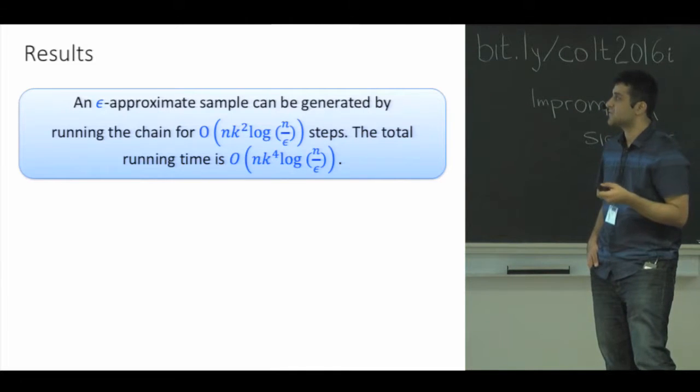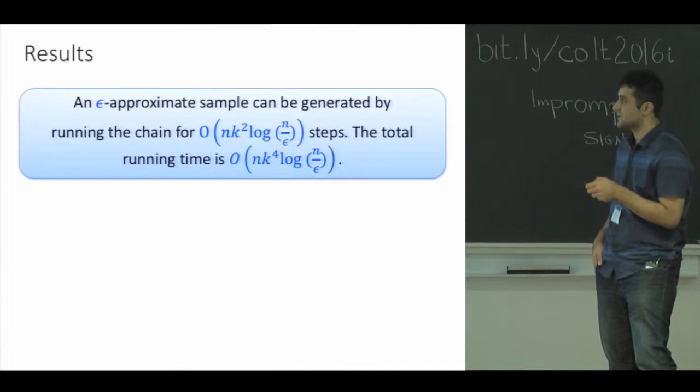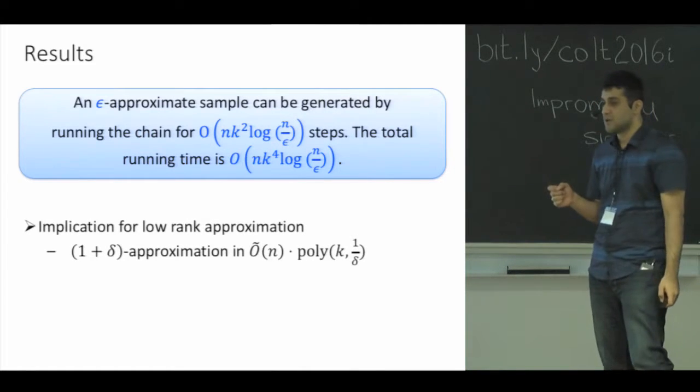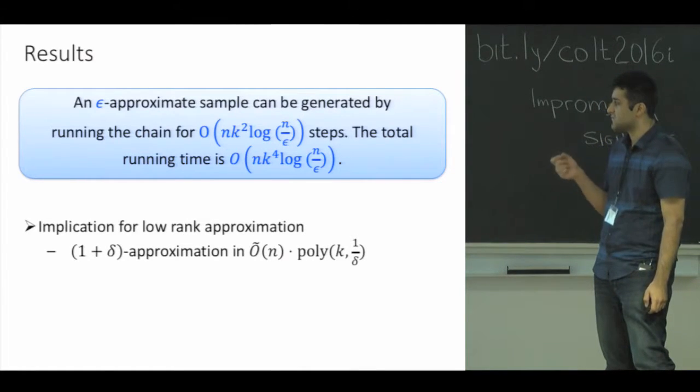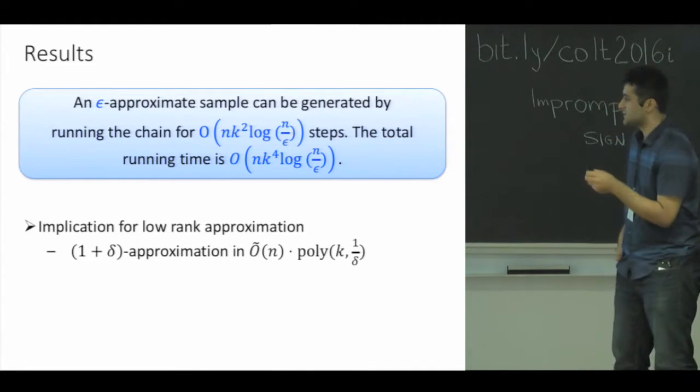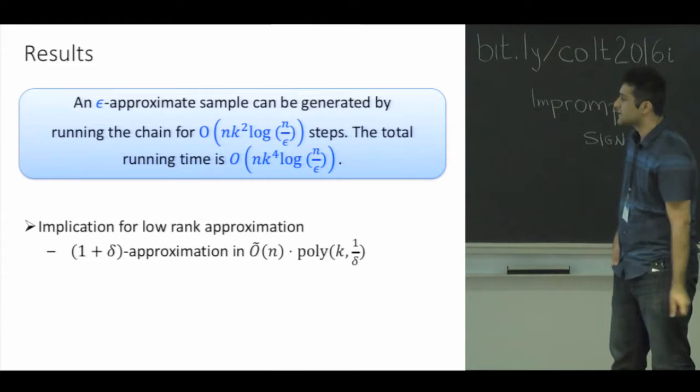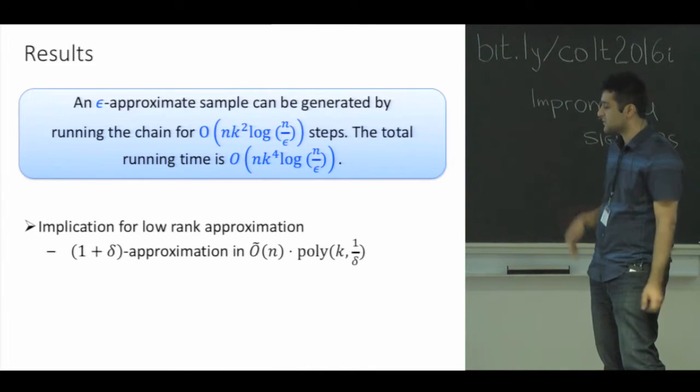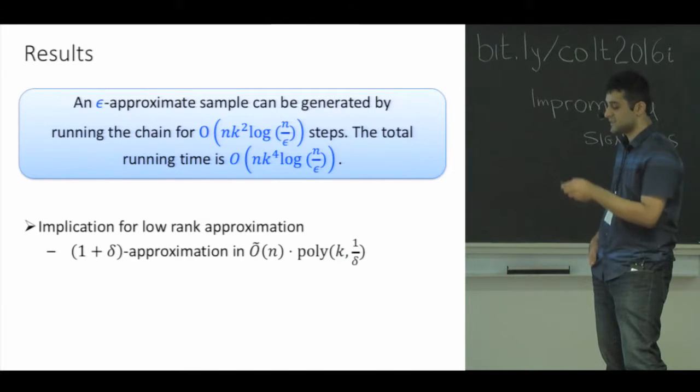By epsilon approximate sample, I mean a sample from a distribution which is at most epsilon away from μ in the total variation distance. As a result, it also gives a sublinear time algorithm which finds a matrix of rank at most k over delta given a matrix, which is a one plus delta approximation to the best rank-k approximation of a given matrix, assuming that the product of the matrix and its transpose is given in the input.